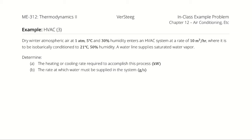Problem number three: dry winter atmospheric air at one atmosphere, 5°C, and 30% humidity enters an HVAC system at a rate of 10 cubic meters per hour, where it is to be isobarically conditioned to 21°C and 50% humidity. A water line supplies saturated water vapor if necessary. We want to find the heating or cooling rate required and, if water must be added, how much water is needed.